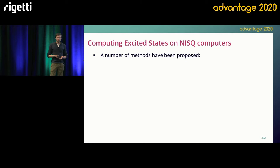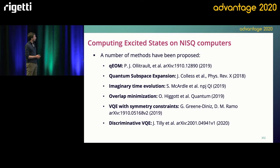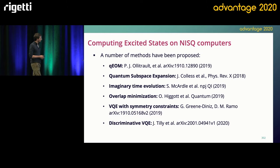Before I go into explaining our method, I just want to point out that there have been a number of methods proposed to compute molecular excited states on QPUs, and they all have their advantages, so I strongly suggest that if you're interested in the field you go have a look at them — it's a very good read. The last one is our method, developed by us at RACO in partnership with one of our customers, which is the chemical company Johnson Matthey. It is called the Discriminative VQE.